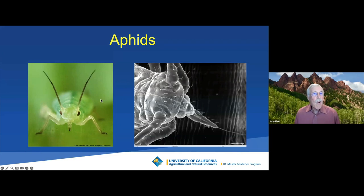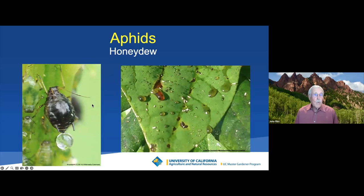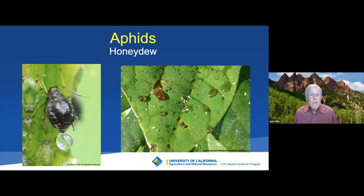They have adaptations in their digestive system so they excrete this excess sugar, called honeydew. You can see it on leaves — sometimes on roses the leaves look shiny, and if you touch it, it's sticky. Sometimes aphids are in trees and they drop their honeydew onto your car, driveway, and walkways. It can be real messy.